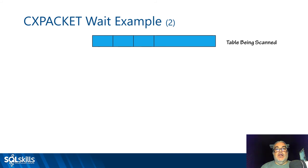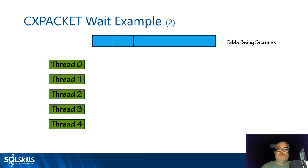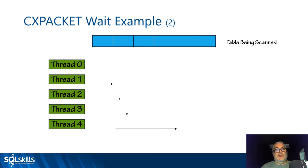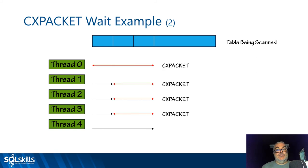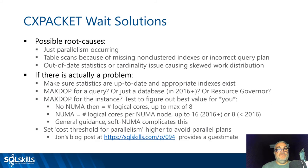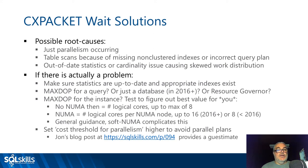In a skewed example, a lot more data has been added but stats haven't been updated. Running DOP 4, the four threads are given equal ranges to read, but one thread — say thread 4 — has far more actual data. Threads 1, 2, and 3 finish early and then also register CX packet waits while waiting for thread 4. Non-zero thread IDs registering CX packet waits is the sign of skewed parallelism — caused by inaccurate row estimates.